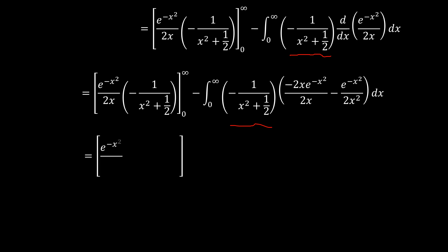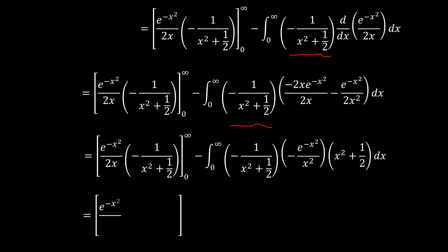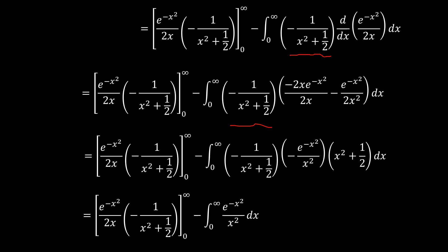Simplifying further, keeping the first term, then pulling out negative e to the power negative x squared over 2x squared, we are left with x squared plus one half. These cancel, the negatives combine to a positive, and we now have a reduced integral which is the integral from 0 to infinity of e to the power negative x squared over x squared. Interesting.